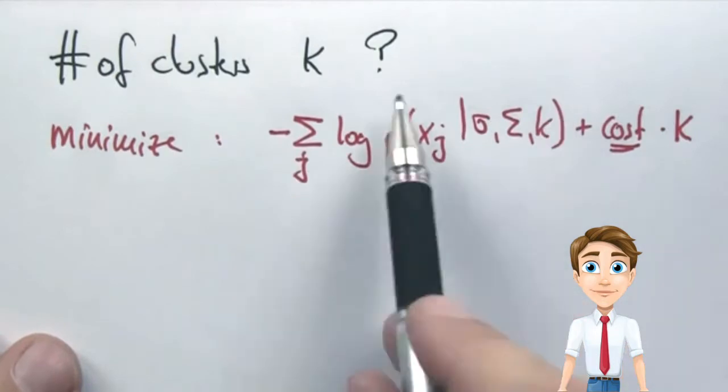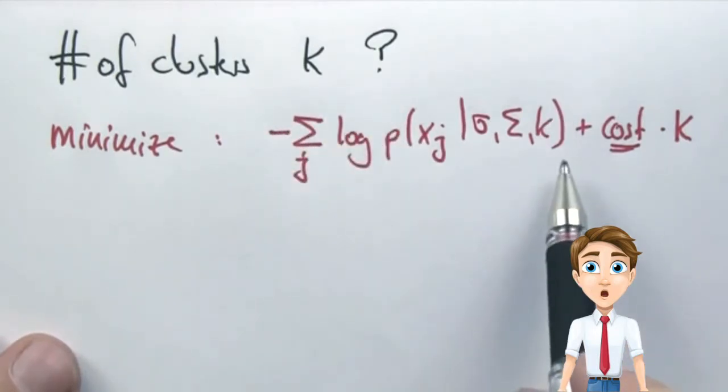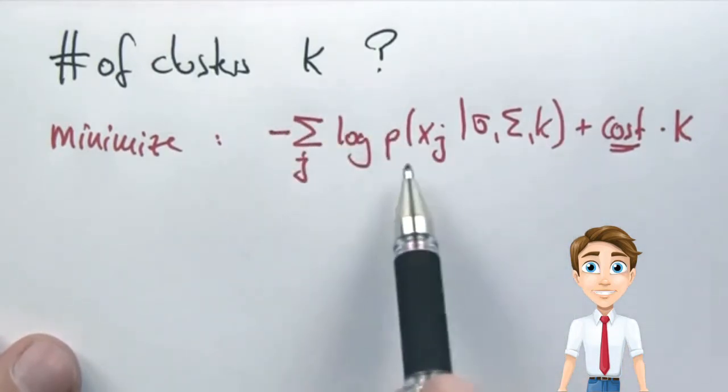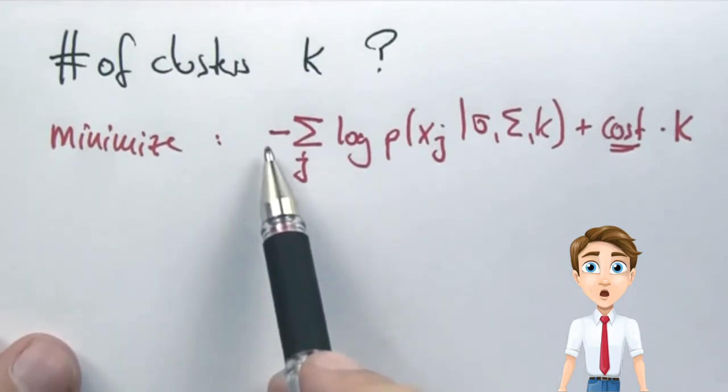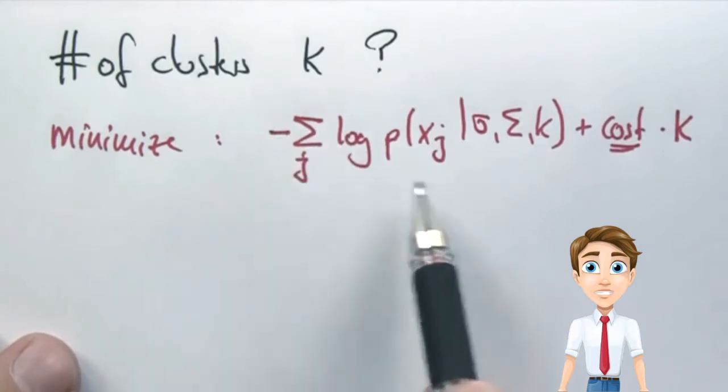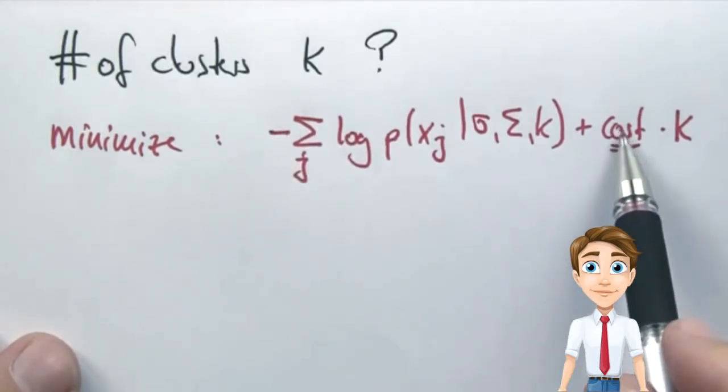In particular, you're going to minimize the negative log-likelihood of your data given the model plus a constant penalty per cluster. If you look at this expression, this is the expression that EM already minimizes. We maximize the posterior probability of data, logarithmic is a monotonic function, and I put a minus sign over here so the optimization problem becomes a minimization problem. This one over here, where you have a constant cost per cluster, is new.